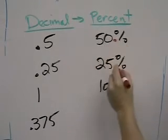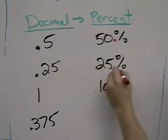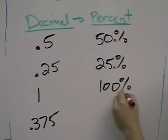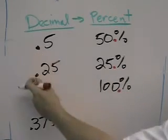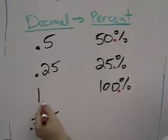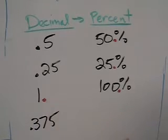Where's the decimal here in 50? It's right here. Where's the decimal in 25? It's right here. Where's the decimal in 100? It's right here. The decimal in 1 is down here, at the end of the 1.